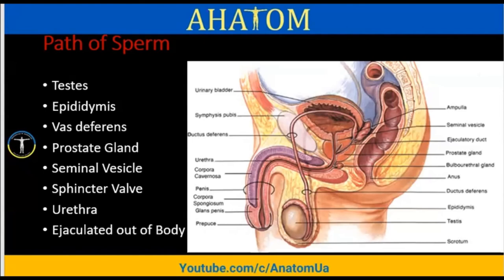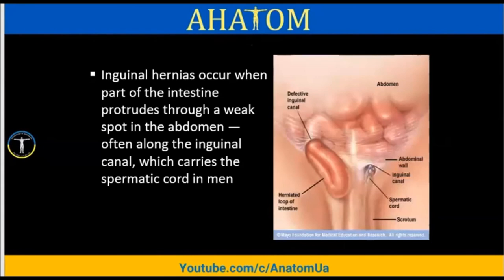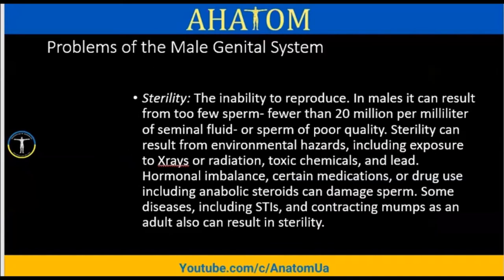Problems of the male genital system include inguinal hernia — a separation of tissues that allows part of the intestine to push into the abdominal wall near the top of the scrotum. Straining the abdominal muscles or lifting heavy objects can cause this. Inguinal hernia occurs when part of the intestine protrudes through a weak spot in the abdomen, often along the inguinal canal, which carries the spermatic cord in men.